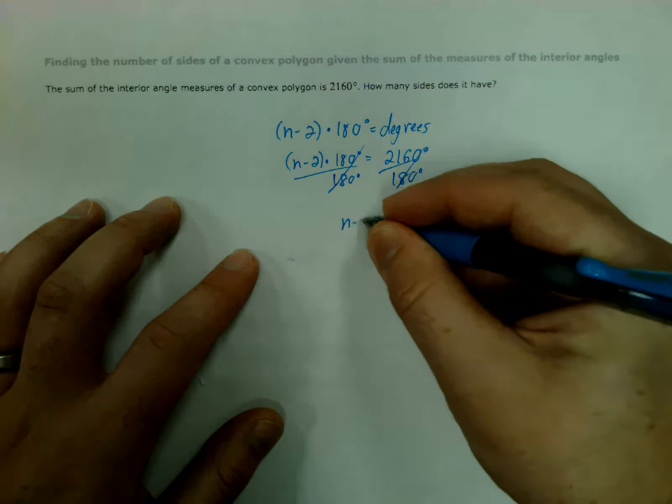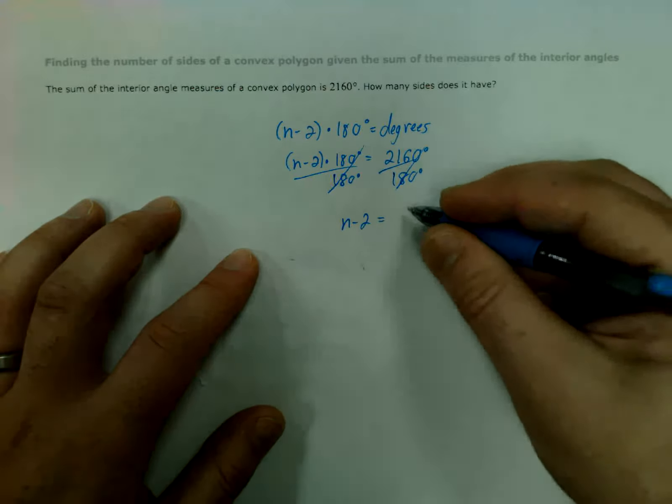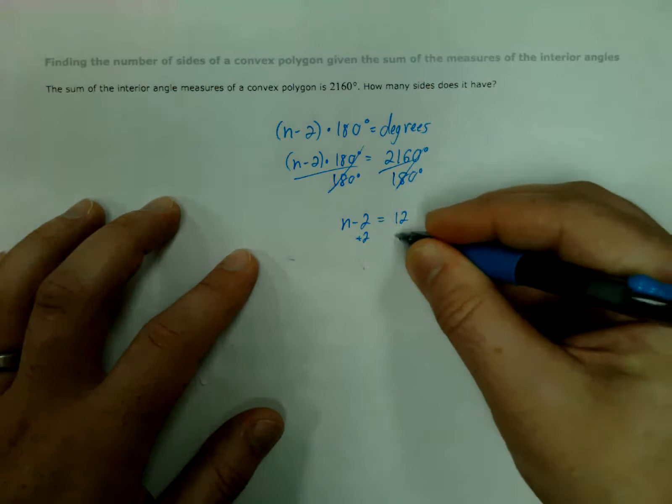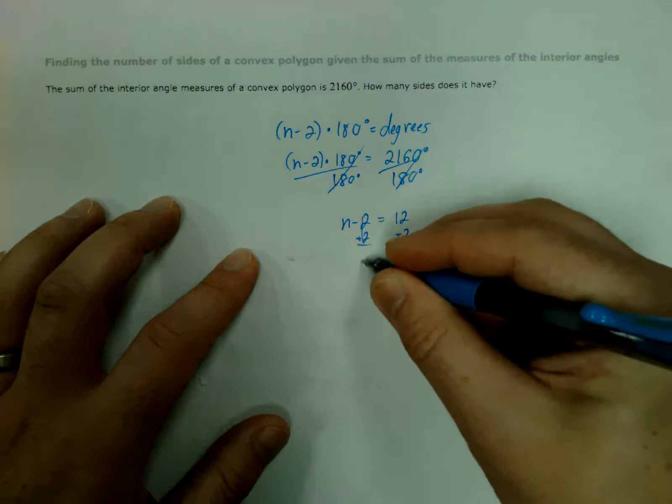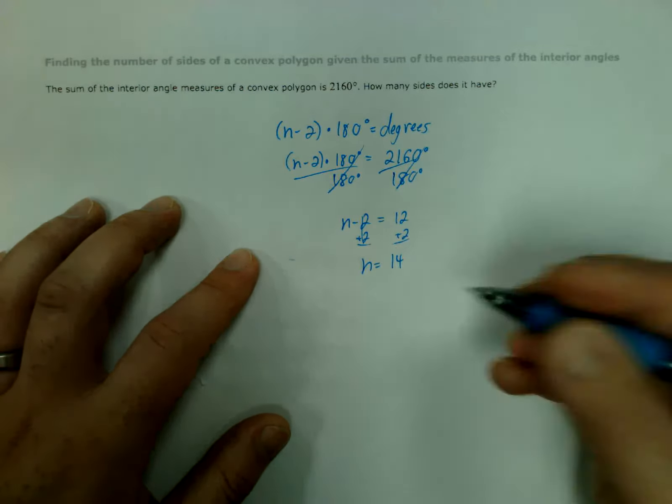And that leaves us with n minus 2 left on the left side, and then this comes out to 12, add 2, get n by itself.